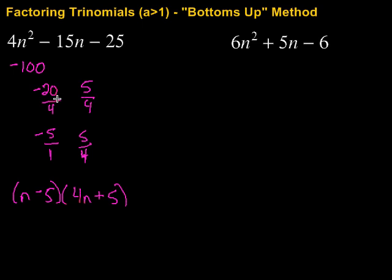Then double check. Make sure we've got the right thing. So N times 4N, that would be 4N squared. That's what we had there. Then N times 5, that's 5N. Negative 5 times 4N would be negative 20N. Negative 20N plus 5N is indeed negative 15N. And then finally negative 5 times 5 is negative 25. Sure beats good old guessing and checking.